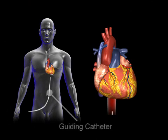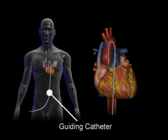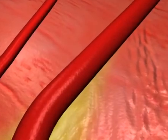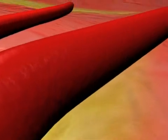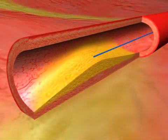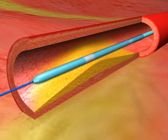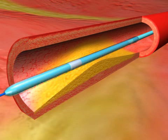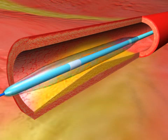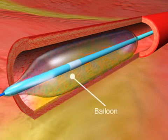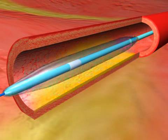A guiding catheter is passed through a large artery in the groin or arm to the heart. A guide wire is then threaded through the catheter and manipulated beyond the site of the blockage. With the guide wire in place, a balloon catheter is inserted over the guide wire and advanced. Once in place, the balloon is gently inflated in the narrowed segment and then deflated after a few minutes. This reopens the artery to allow improved flow of blood.